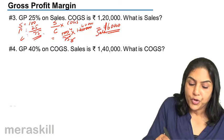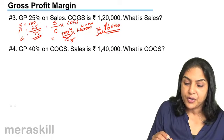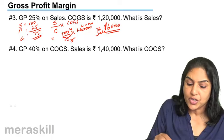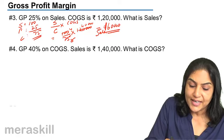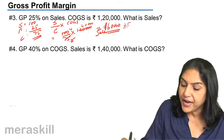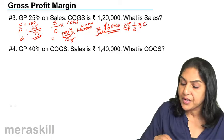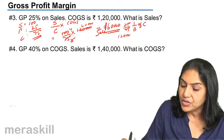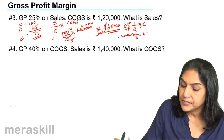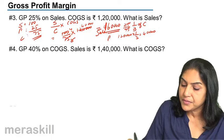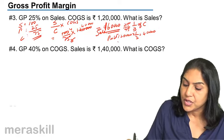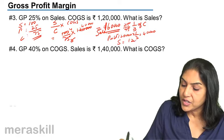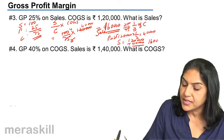Alternatively, since cost of goods sold is given, the relation of profit to cost is 25 by 75, which is 1 by 3. So profit equals 1/3 of 1 lakh 20,000, which is 40,000. Therefore sales equals 1 lakh 20,000 plus 40,000 equals 1 lakh 60,000.